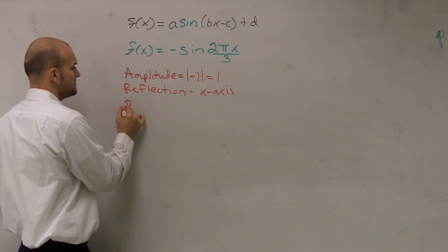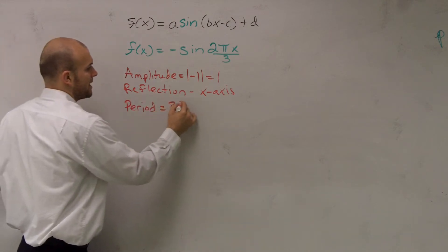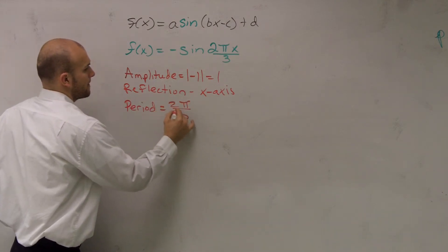Then the next thing is to find the period. This one's going to be a fun one. So the period is going to equal, remember, 2 pi over b.